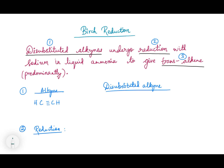Hello friends, welcome to my YouTube channel. In this video we are going to learn about Birch reduction. Disubstituted alkynes undergo reduction with sodium in liquid ammonia to give trans alkene as the major product.